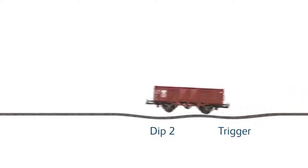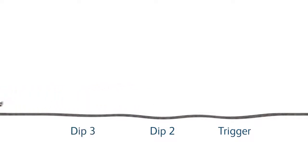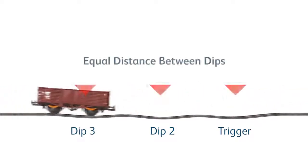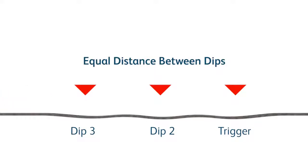If untreated, the combination of the first two dips will propagate a third dip further along the track, at the same distance as the distance between dip 1 and 2.